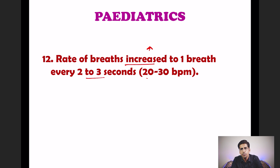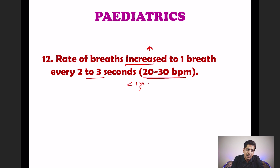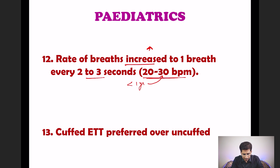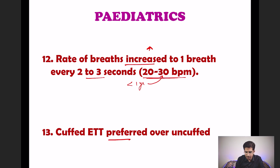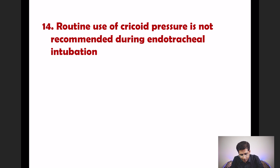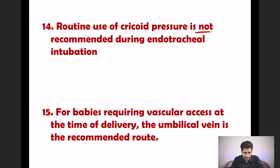In the pediatric age group, the rate of breaths has increased to one breath every two to three seconds, approximately 20 to 30 breaths per minute. For infants under one year, the rescue breath rate from an advanced airway is approximately 30 breaths per minute. Additionally, curved endotracheal tubes are now preferred over uncuffed tubes, whereas in 2015 uncuffed tubes were recommended due to concerns about subglottic stenosis.